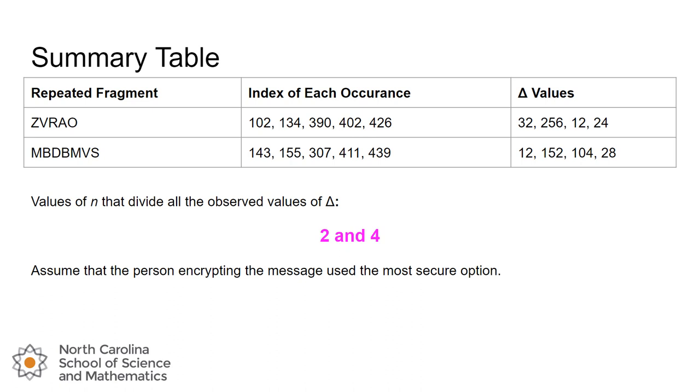Now notice we can get a lot of different delta values. But there's only one value for n. n is the actual value of our keyword. And remember what we just said. If we assume that those repeated fragments in the ciphertext are coming from not chance, but repeated fragments in the plaintext, then whatever the length of the keyword n, it has to divide all of these deltas. Not just one or two, but all of them.